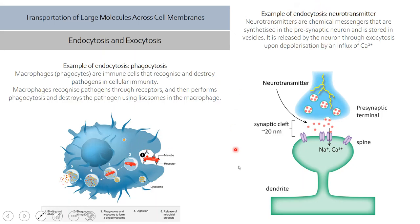The second example is exocytosis, found in the process of neurotransmission. Neuron cells contain neurotransmitters inside little vesicles. When ready to perform neurotransmission, the neuron expels these vesicles out into the junction. This process of expelling large vesicles out of the cell is called exocytosis. These are the two mechanisms for transporting very large molecules across cell membranes.